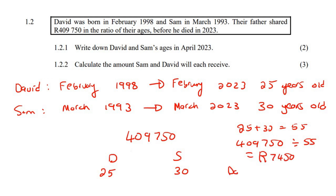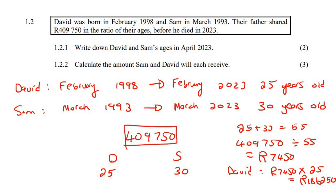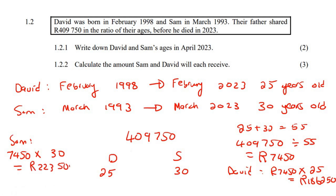For David, we calculate 7,450 multiplied by 25, which gives us 186,250 Rand. For Sam, using the same technique, we calculate 7,450 multiplied by 30, which gives us 223,500 Rand.